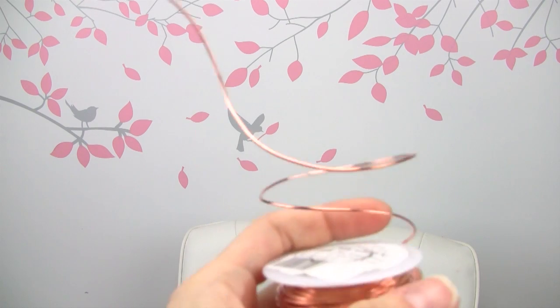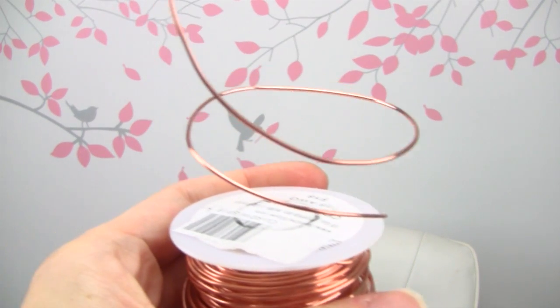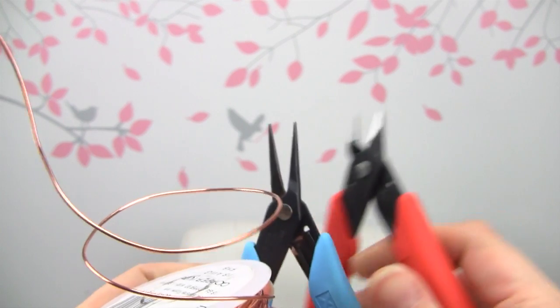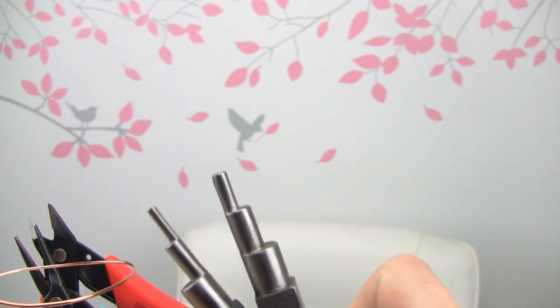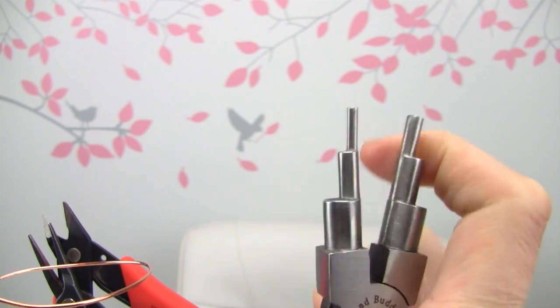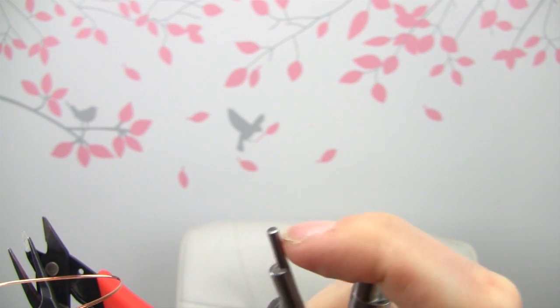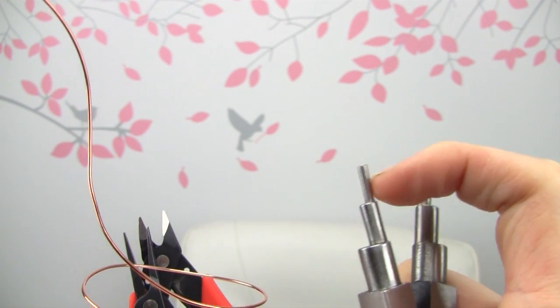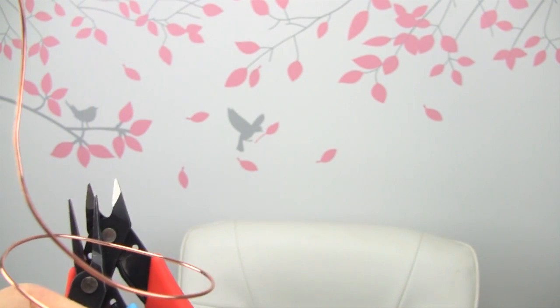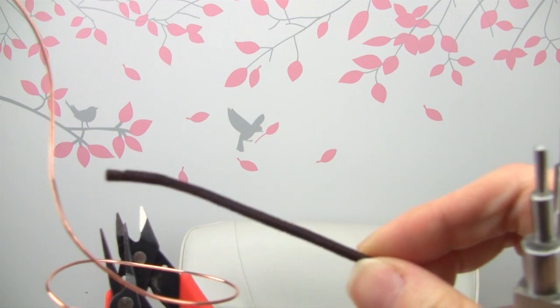So you're going to need some 18 gauge wire, some pliers and wire cutters, and then you don't have to have this exact tool here, but something round and small to wrap your wire around. We're going to make kind of like a little spring or spiral looking thing. And of course your cord.